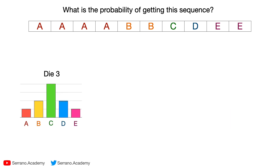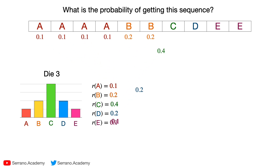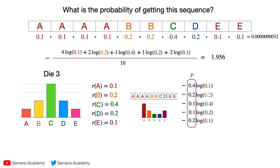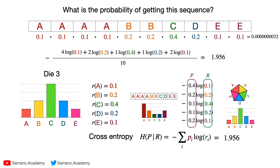Now let's do the exact same thing for Die 3. This one should give us a much smaller probability because its distribution is very different from the sequence. We have 0.1 for the four A's, 0.2 for the B's, 0.4 for the C, 0.2 for the D, and 0.1 for the E's. The probability here is super tiny — there are a lot of zeros. When we take the logarithm, average, and negate, we get 1.956. On the left we have P from the sequence, and on the right we have R from Die 3. So the cross entropy H(P, R) = 1.956.